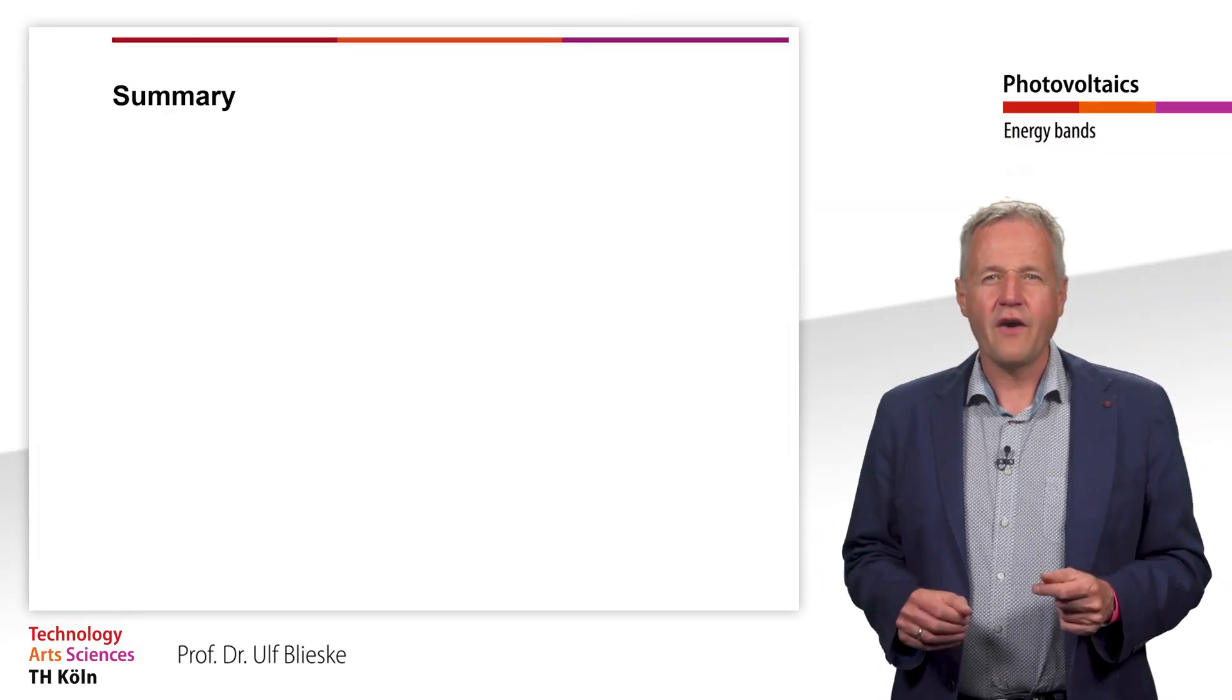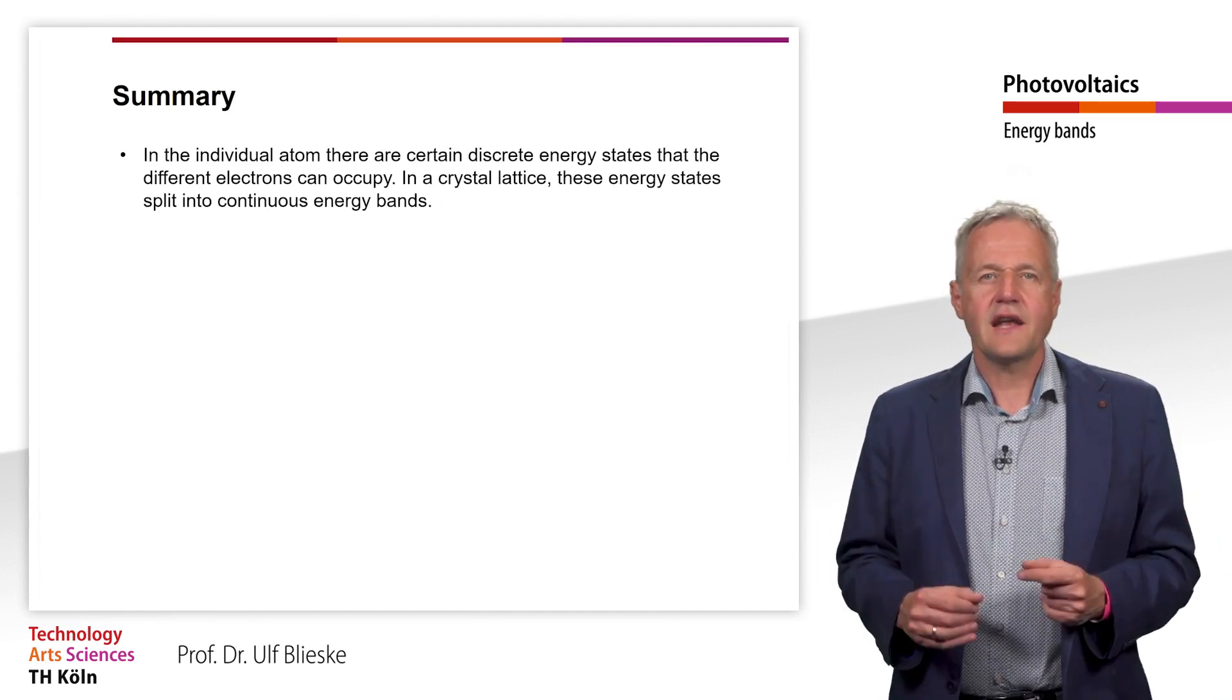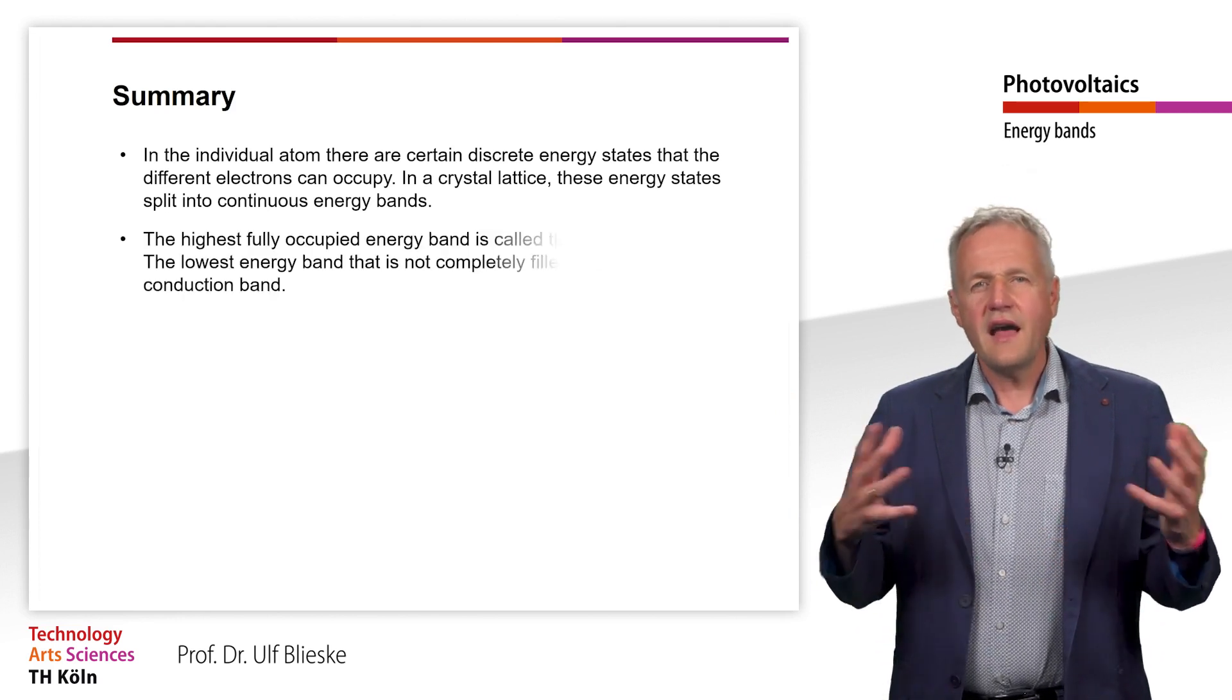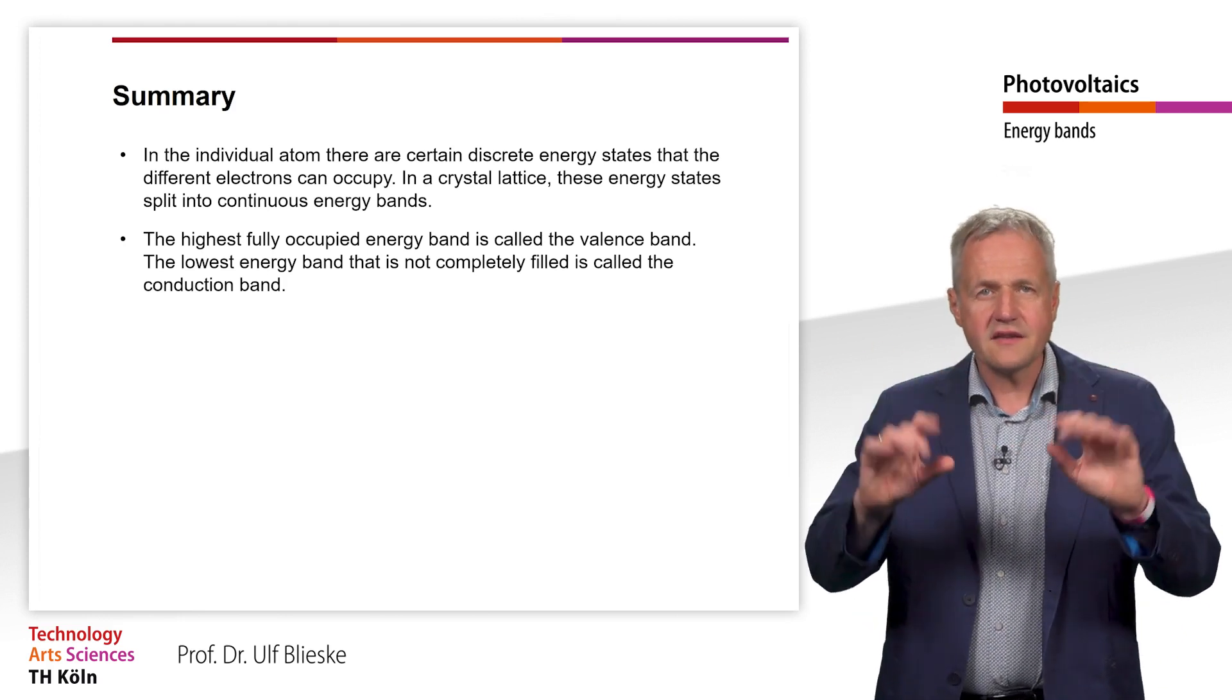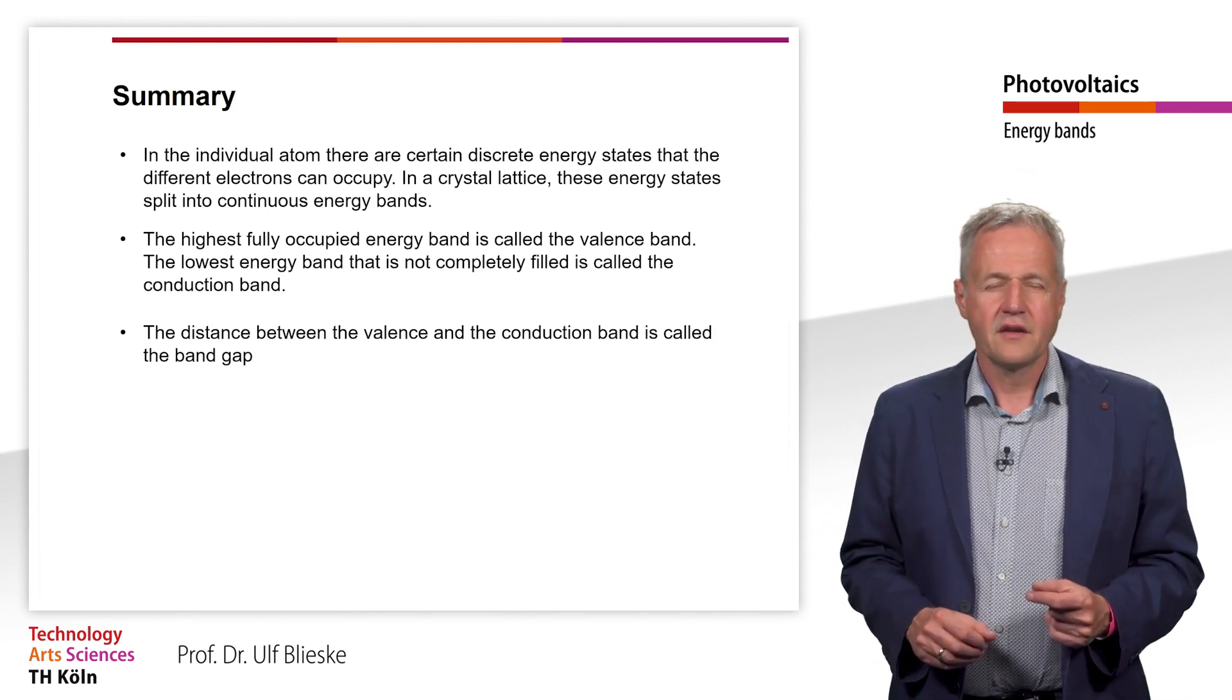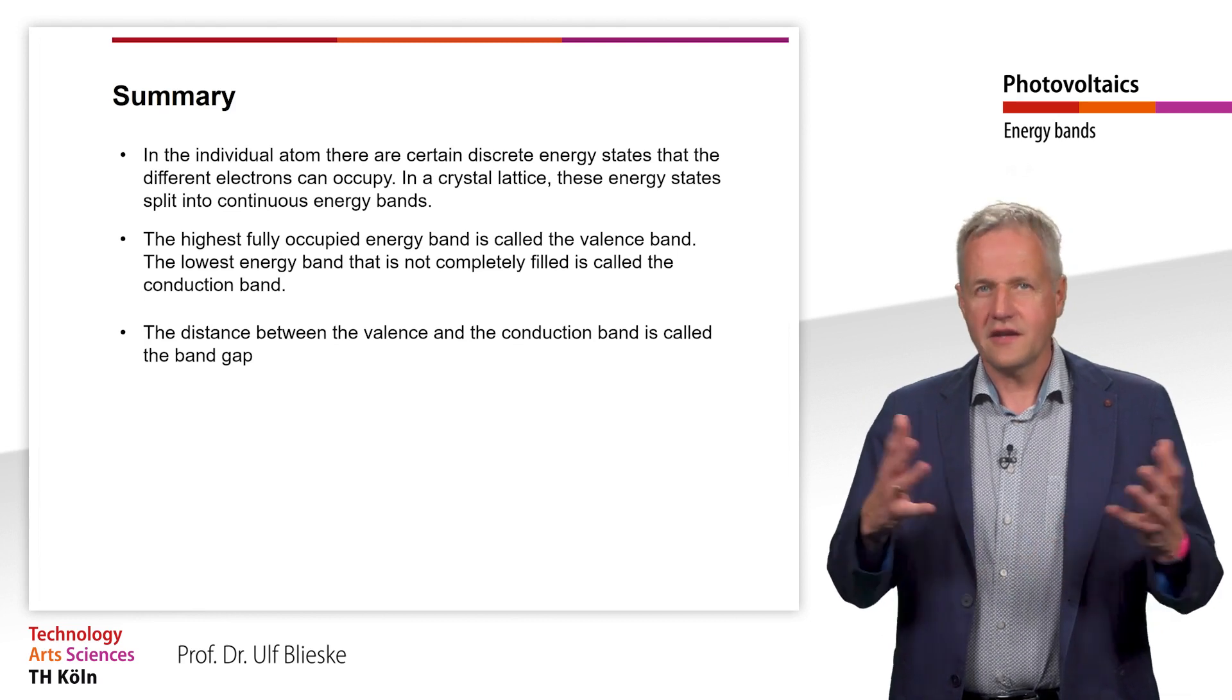We have now learned how energy bands and band gaps arise. In the individual atom, there are discrete energy states that the various electrons can assume. In a crystal lattice, these energy states split into continuous energy bands. The last fully occupied energy band is called the valence band. The first band that is not completely filled is the conduction band. The distance between the valence and the conduction bands is called the band gap. In the next learning unit, we will take a closer look at the semiconductor and its energy bands. I thank you for your attention.